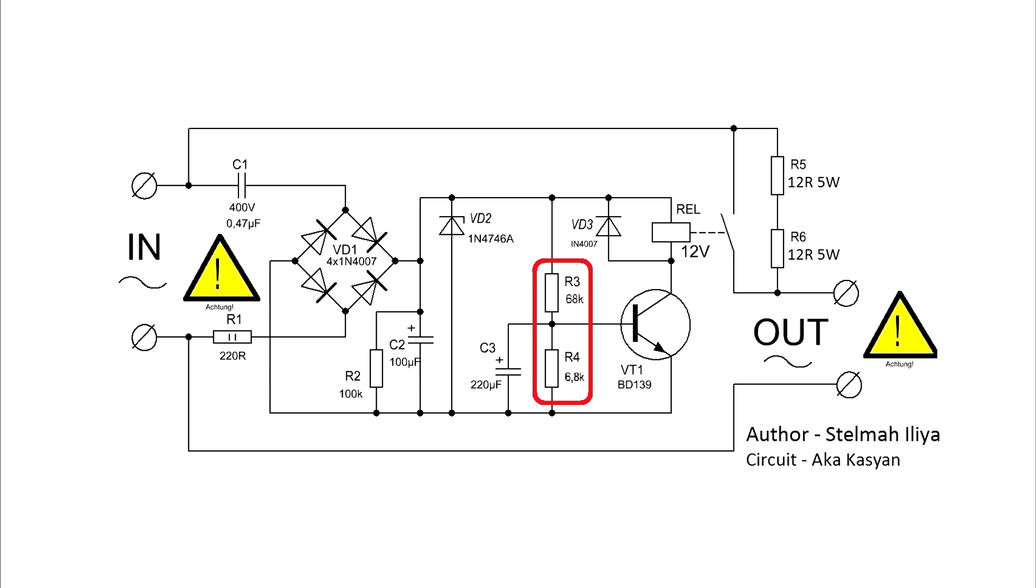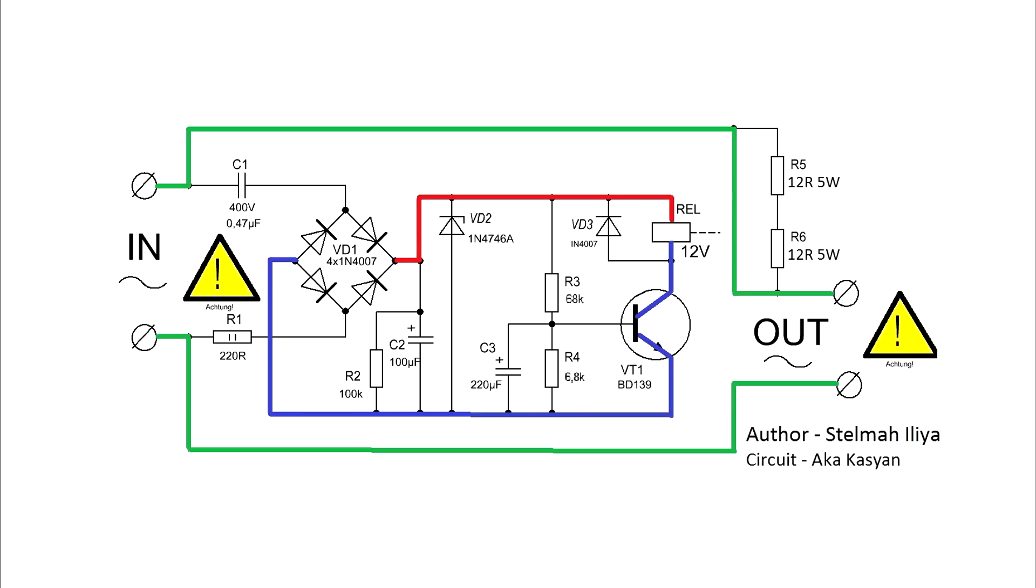Resistors R3 and R4 form a voltage divider. Through the upper resistor R3, the delay capacitor C3 is smoothly charged. When the voltage reaches a sufficient value, the transistor will open and supply power to the relay winding. The relay will work, and through its closed contacts the main voltage will go to the load, bypassing the powerful resistors.